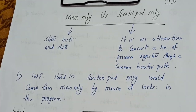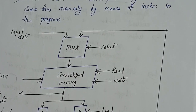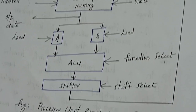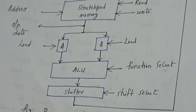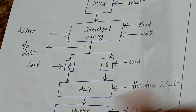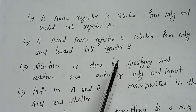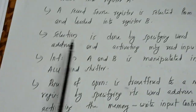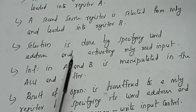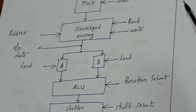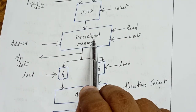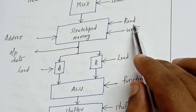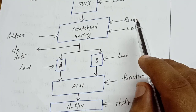Now we will see how scratchpad memory works. This diagram shows a processor unit employing scratchpad memory. A source register is selected from memory and loaded into register A. A second source register is selected from memory and loaded into register B. The selection is done by specifying the word address and activating the memory read input — the address selects a particular word, and the read input must be enabled to read that content.